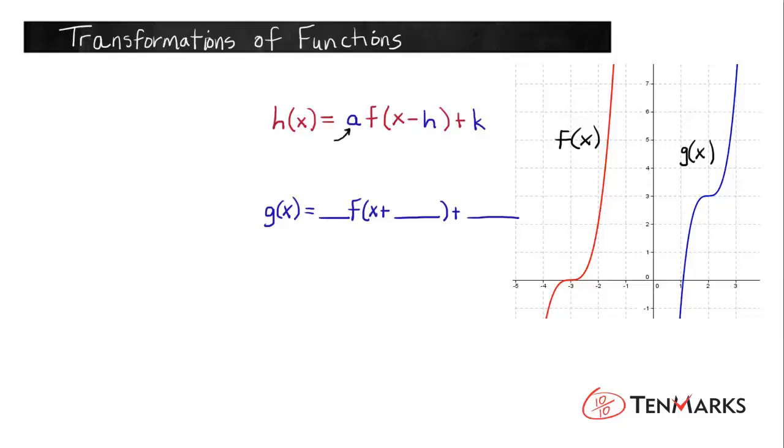Remember that a controls the vertical stretch or the vertical compression of the graph, h controls the horizontal translation or horizontal shift of the graph, and k controls the vertical shift, the movement up and down of the graph.